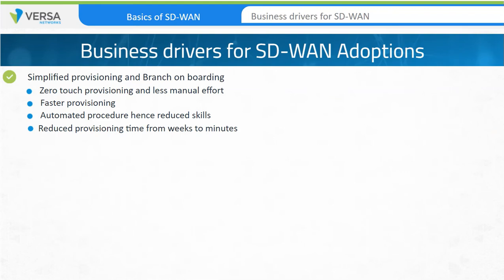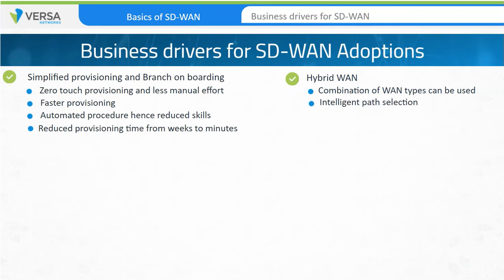The second business driver is hybrid WAN. Instead of relying only on private WAN connections, a combination of WAN technologies can be used at the same time with intelligent path selection based on WAN link performance. SD-WAN architecture fundamentally creates an overlay IP fabric, which is transport agnostic. Any kind of underlay network could be used to build this cloud IP network — private VPN, public internet, LTE, and so forth. Customers can utilize their WAN resources in the most optimal way by defining traffic steering policies. These policies can be based on delay, jitter, packet loss, and even application type, so that applications that demand higher network performance can be forwarded on the most optimal link at all times.